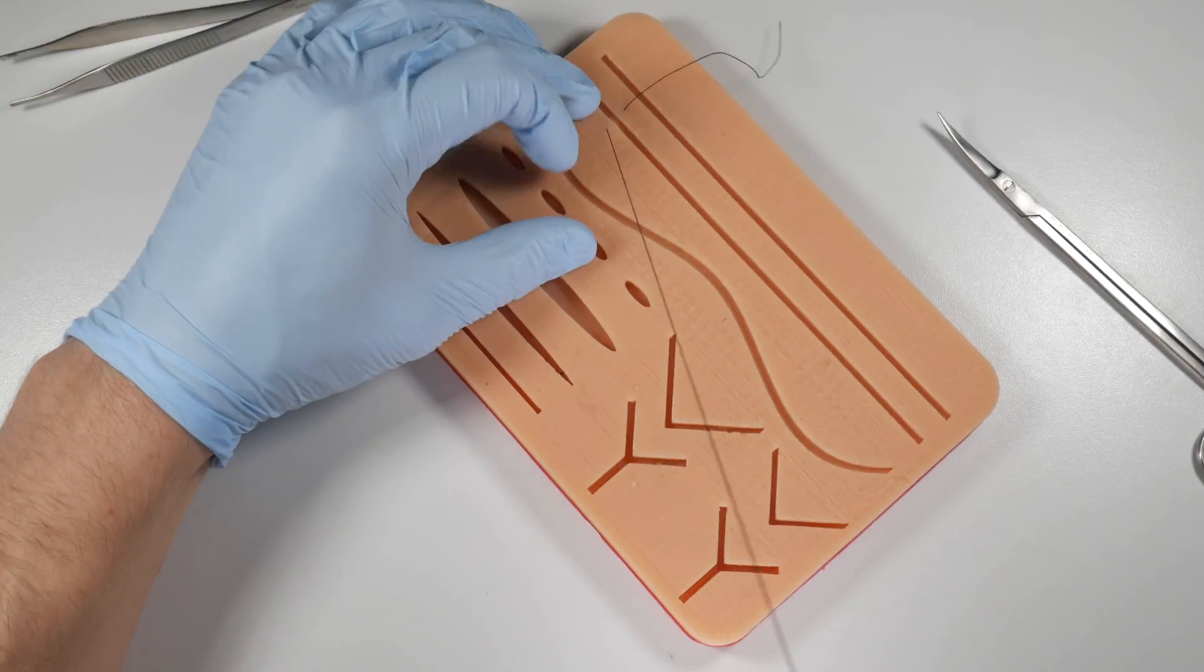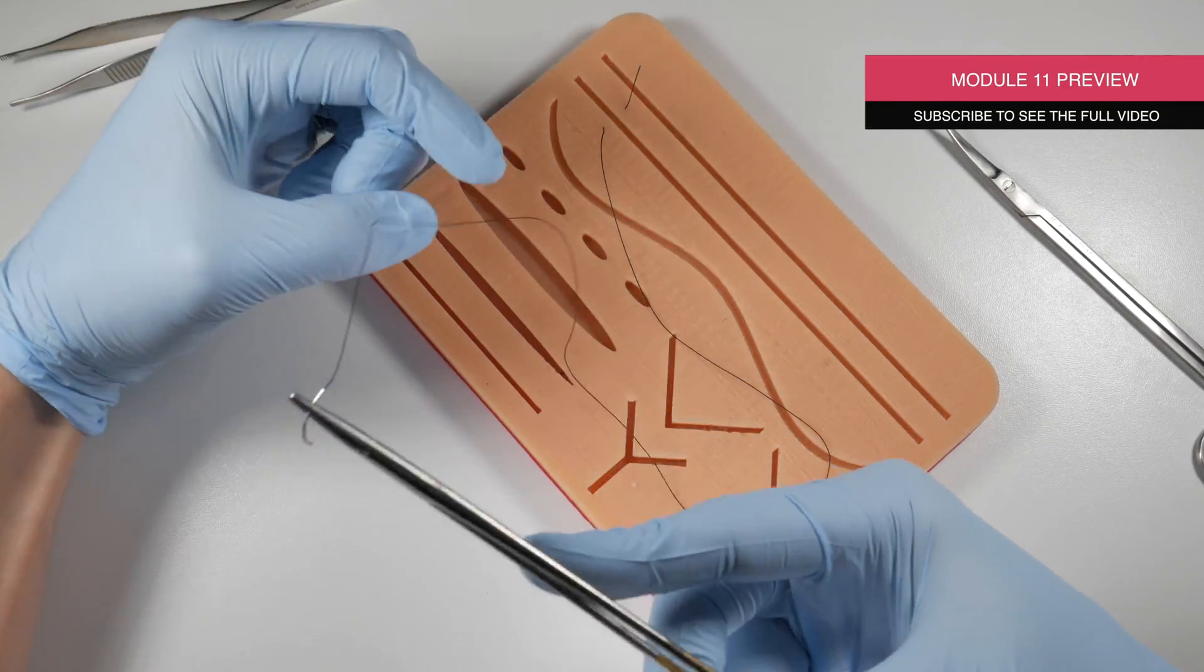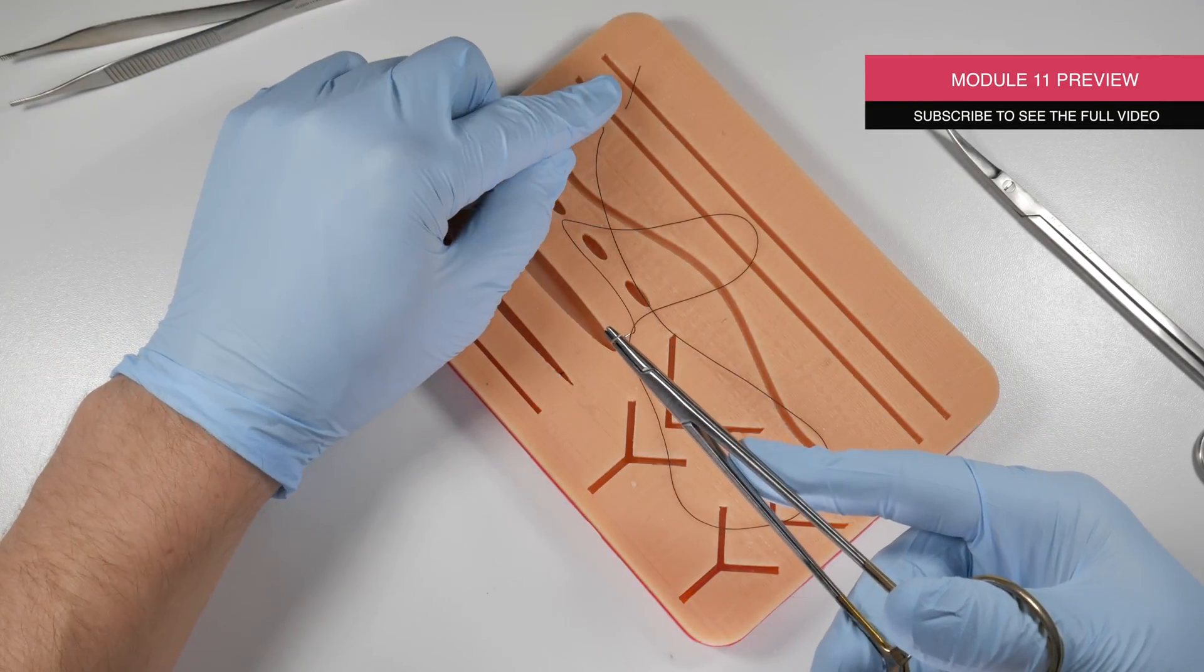We should have a long end and a short end, probably about this much left hanging out. Once we pull this through, that might be about an inch or a little bit under.